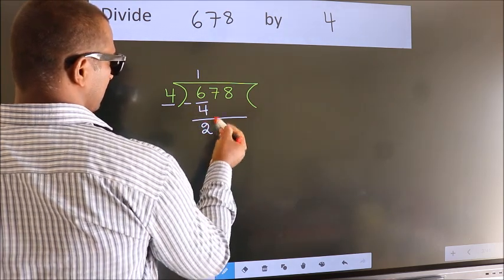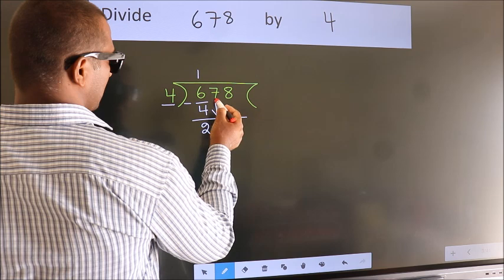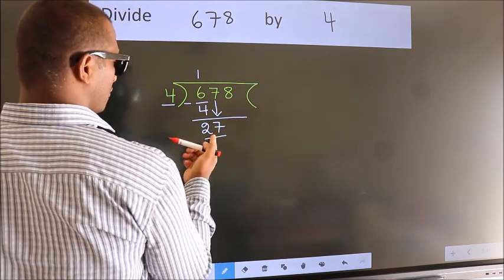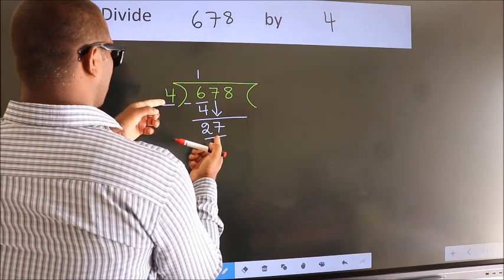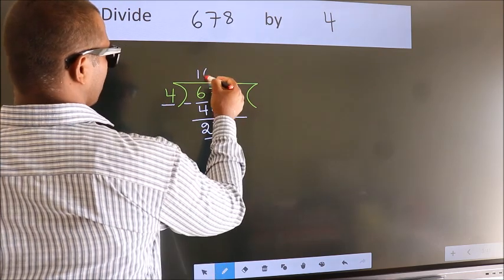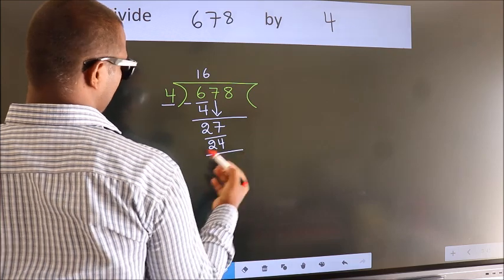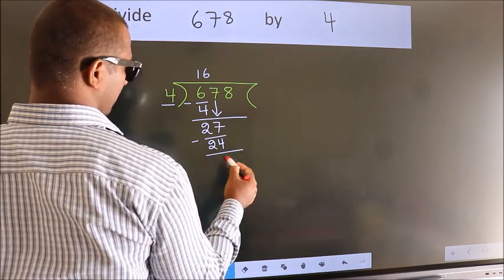After this, bring down the beside number. So 7 down. So 27. A number close to 27 in the 4 table is 4 times 6, 24. Now we subtract. We get 3.